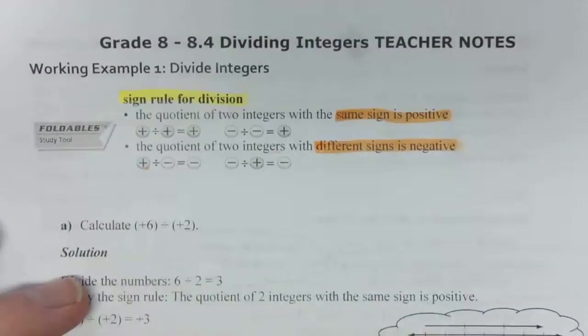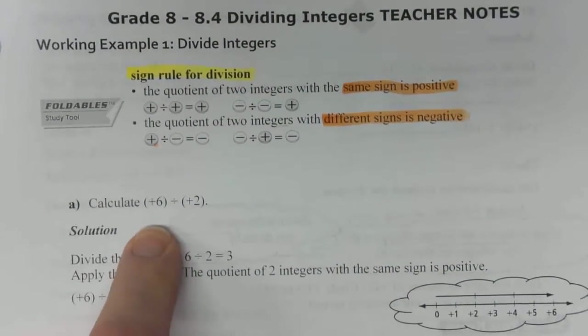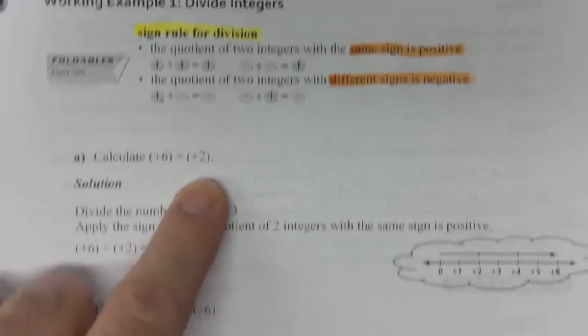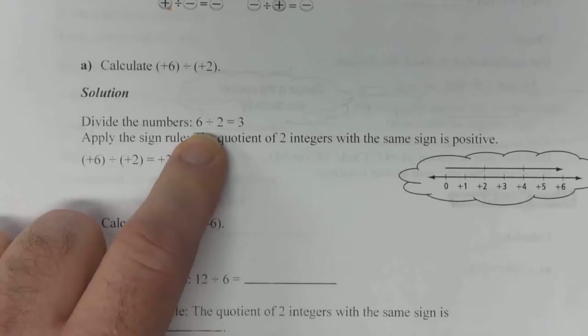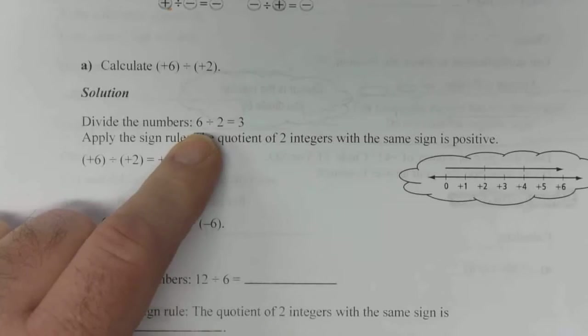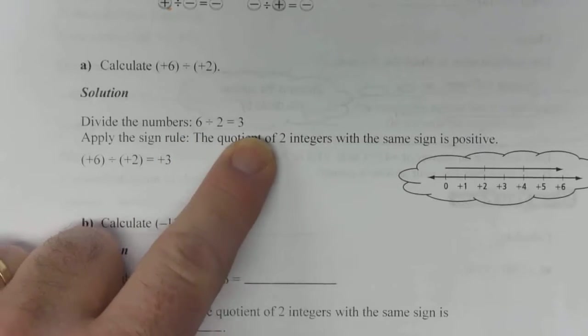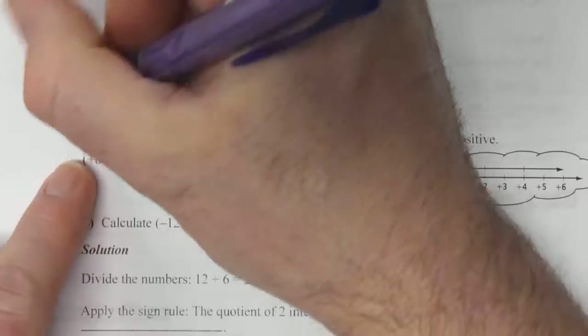Let's have a look. First example is calculate positive 6 divided by positive 2. We're going to divide the numbers first. That's step 1. Just take the numbers, ignore the signs, do the division. 6 divided by 2 is 3. That's step 1.